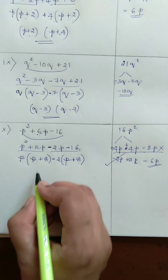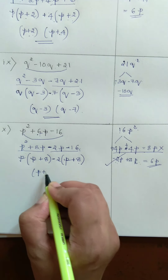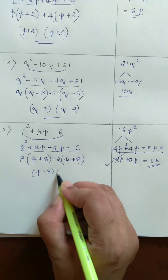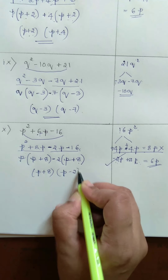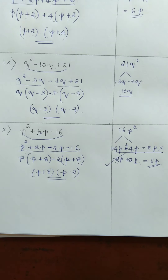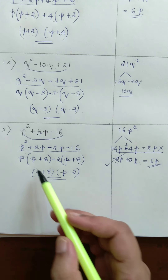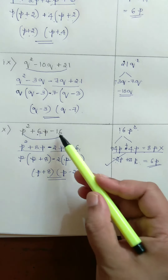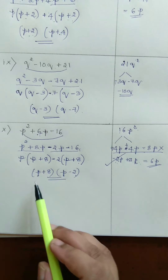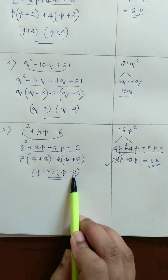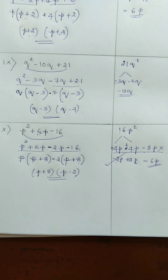Taking P plus 8 as the common factor, the required factorization of this problem is P plus 8 into P minus 2.